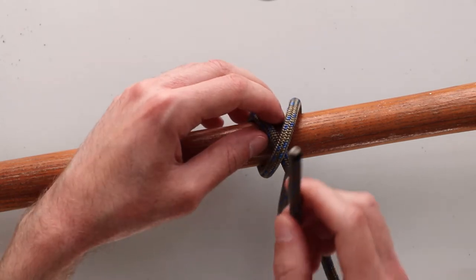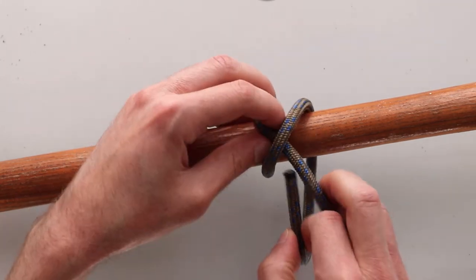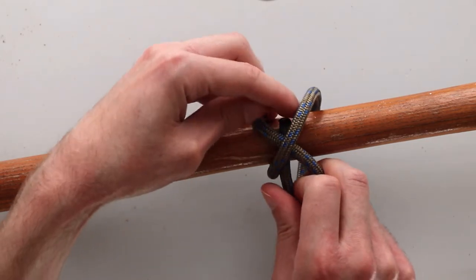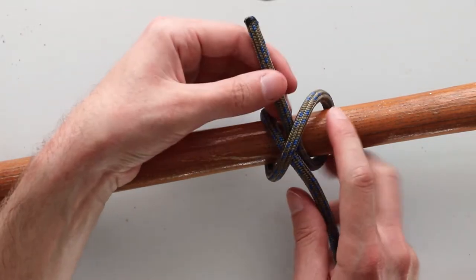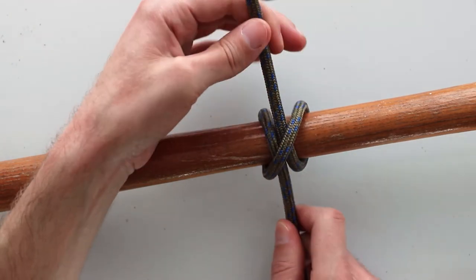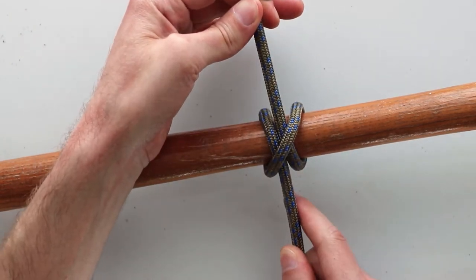That is to take the end of my rope and pass it underneath the X that I've created in my rope. So I'm passing it straight through underneath this X and that is a clove hitch.